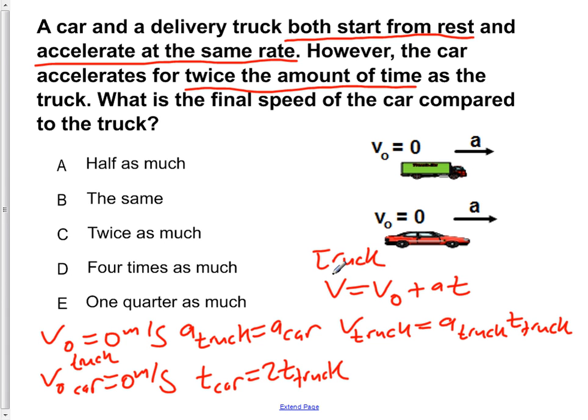Now for the car, I'm going to use green now. For the car, we write the same equation. V equals V0 plus A car times the T of the car. But now we see that our velocity is